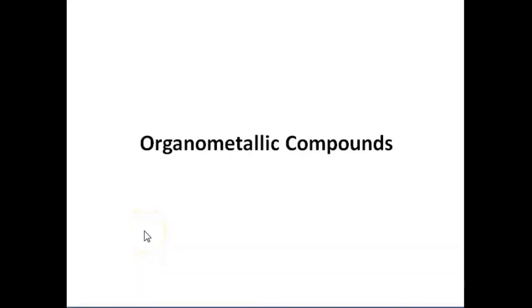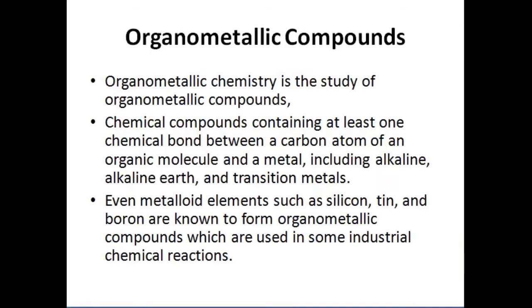Organometallic compounds — first we have to learn what organometallic chemistry is. Organometallic chemistry is the study of organometallic compounds. These are chemical compounds containing at least one chemical bond between a carbon atom of an organic molecule and a metal, which includes alkaline, alkaline earth metals, and transition metals.